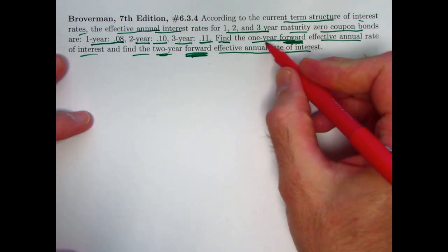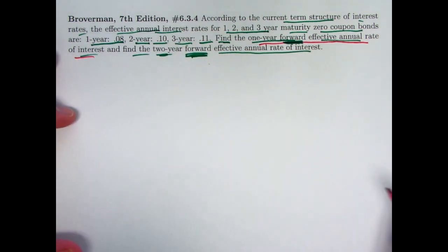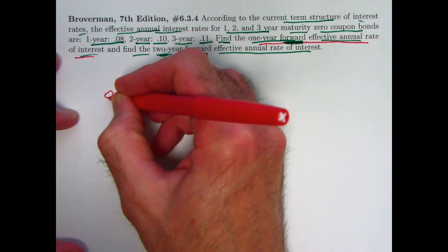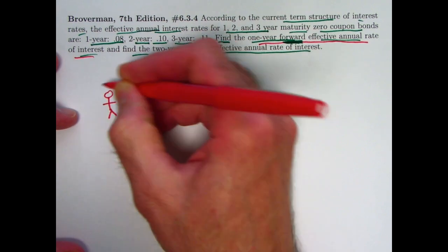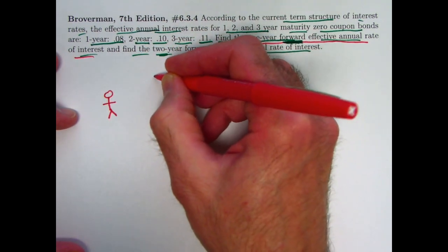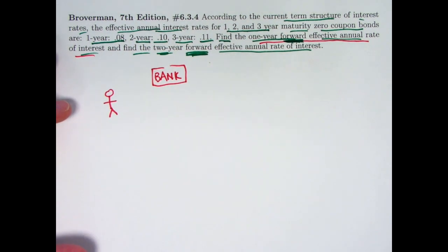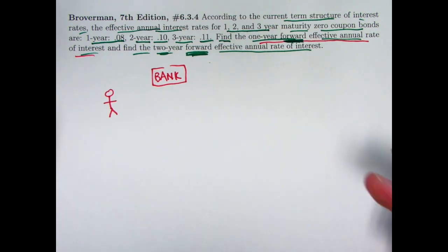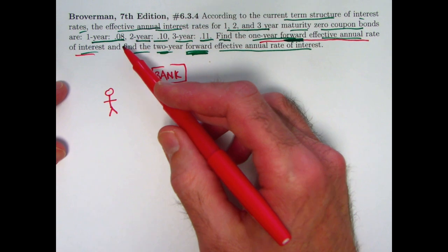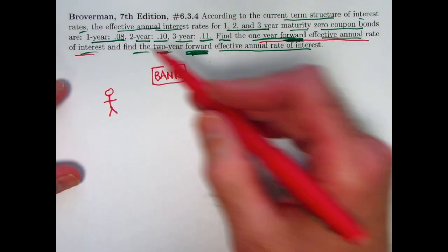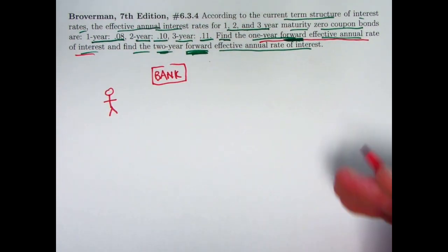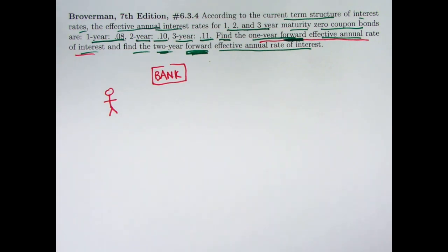Let's focus first on the one year forward effective annual rate of interest. Imagine that this stick figure is you, and you've got a bank that you are going to borrow money from. You're going to immediately take that borrowed money and reinvest it — say in zero coupon bonds. To keep things simple, we'll also assume that the interest rates on the money we borrow follow this same term structure.